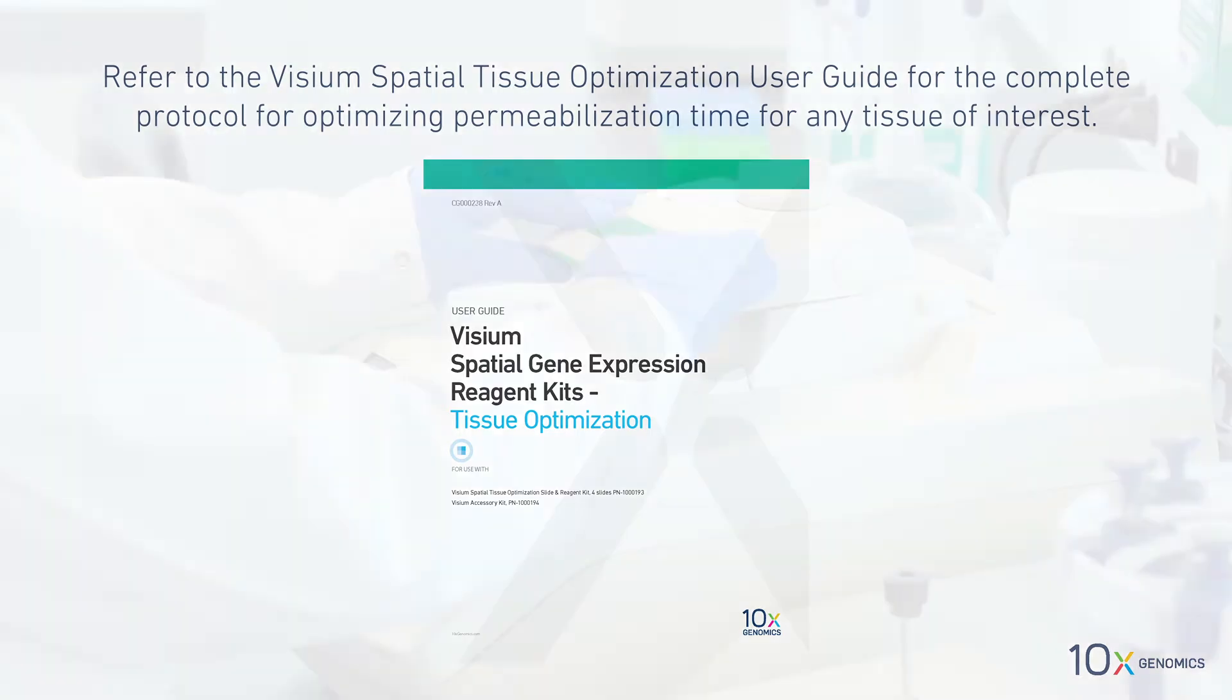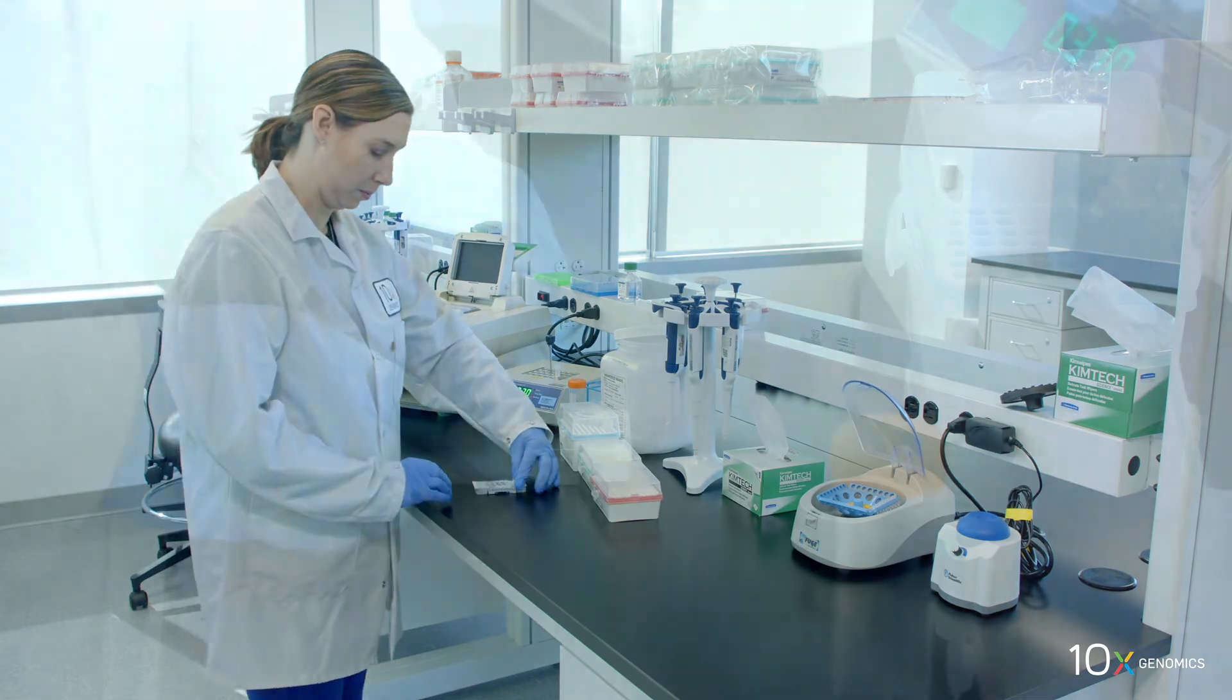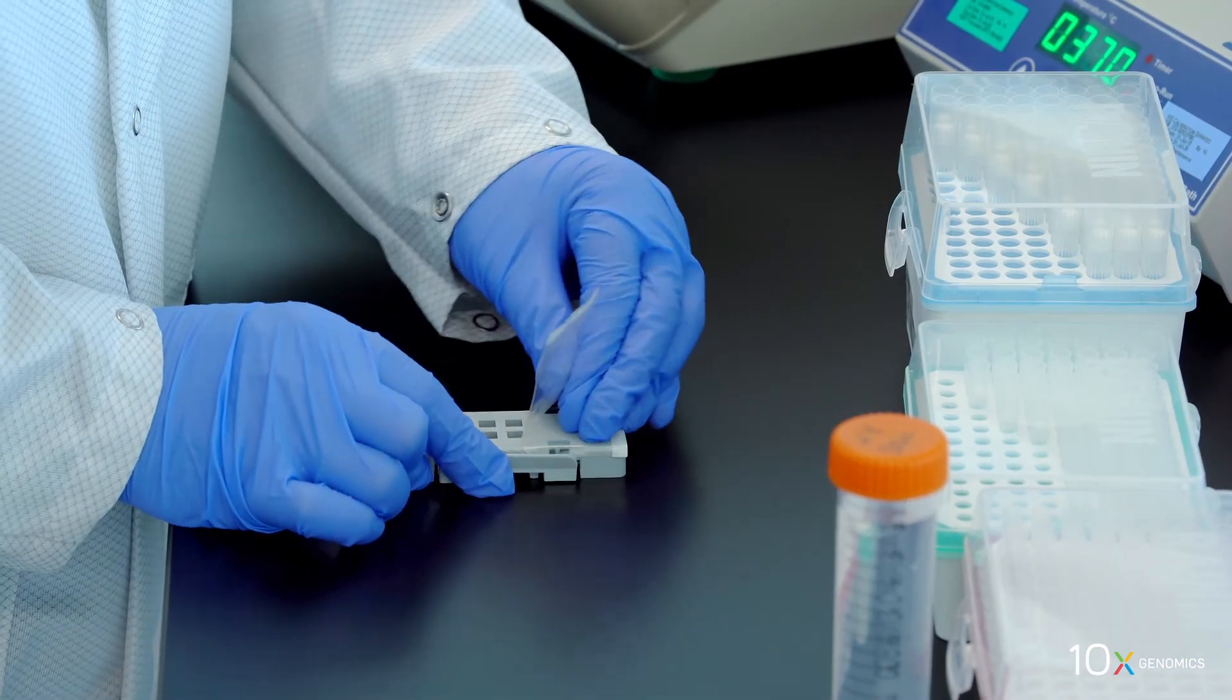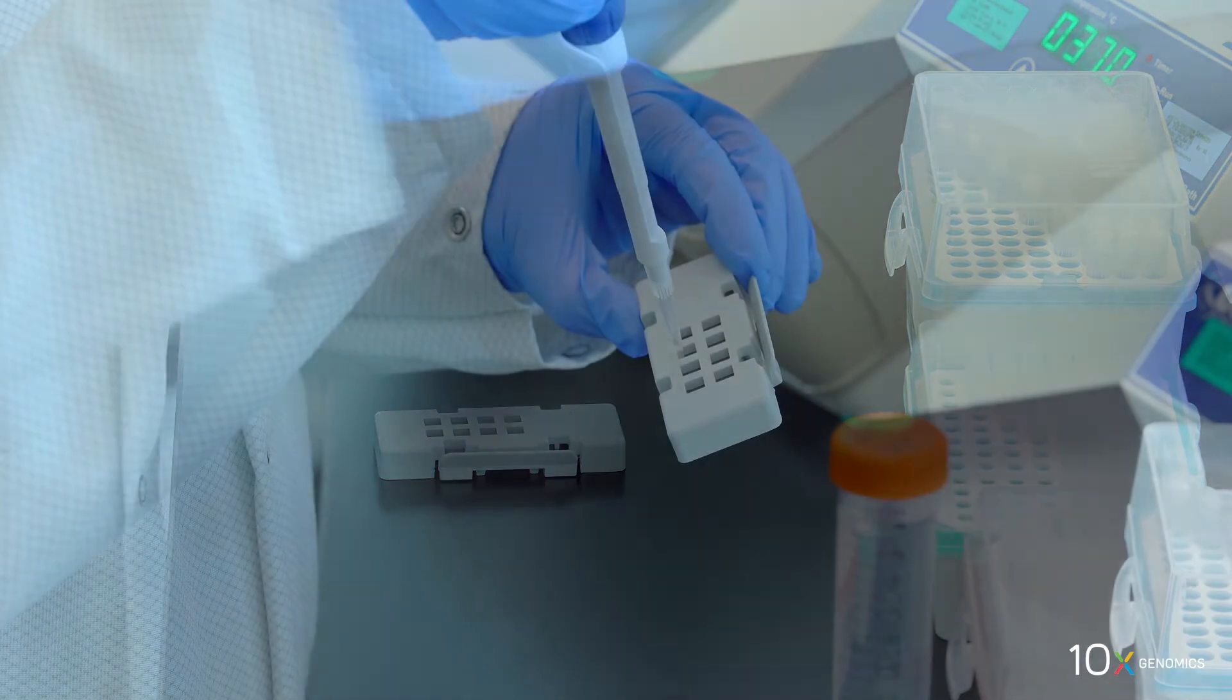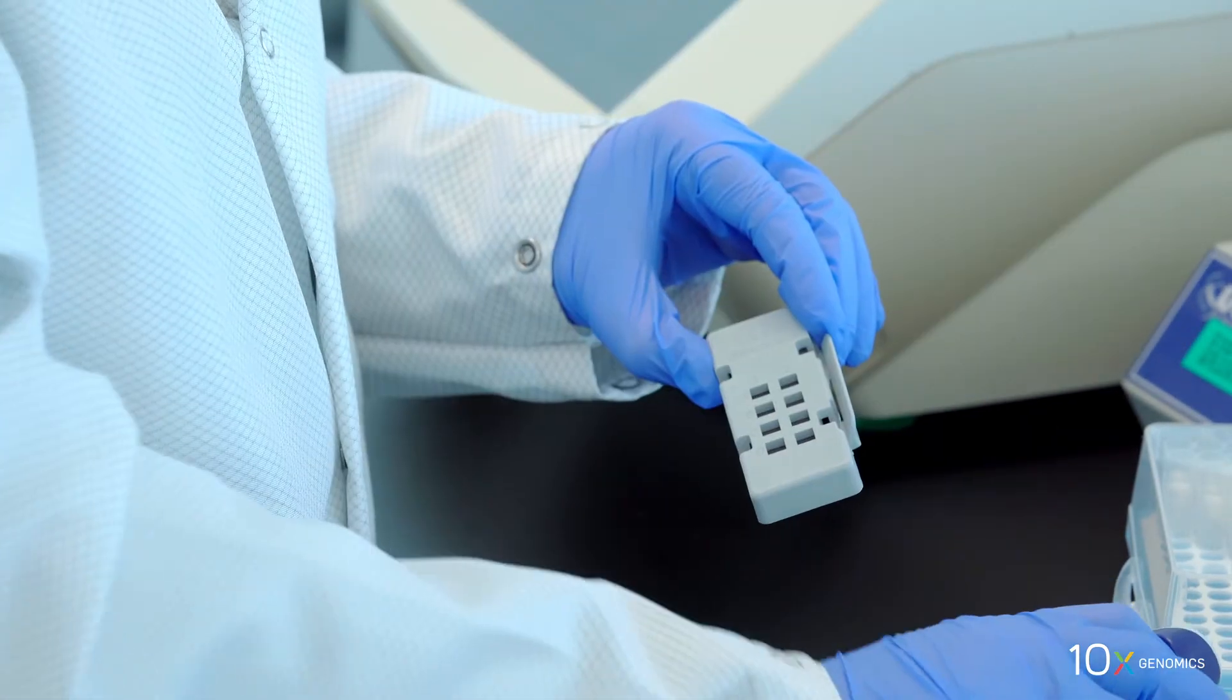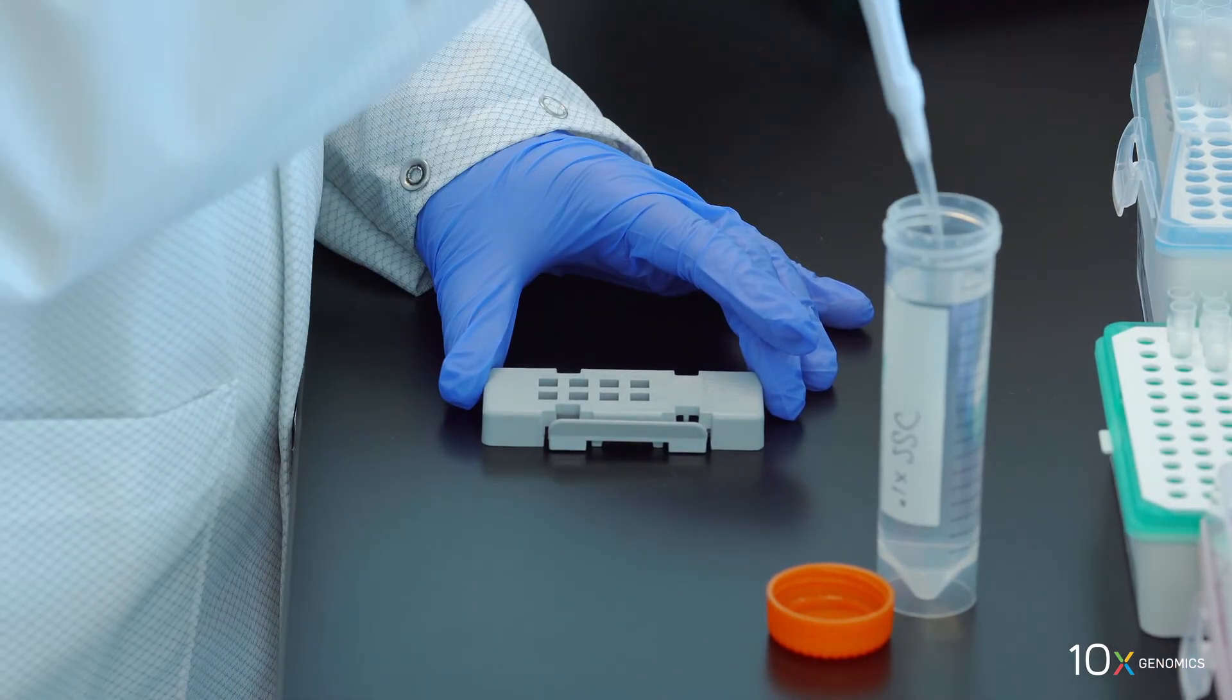After the incubation time has elapsed, remove the slide cassette from the thermocycler adapter. Remove the slide seal by pulling from the edge while firmly holding the slide cassette with one hand. Ensure that no liquid splashes out of the wells. Remove permeabilization enzyme from the well corners. Add 100 microliters of 0.1x SSC to the wells.